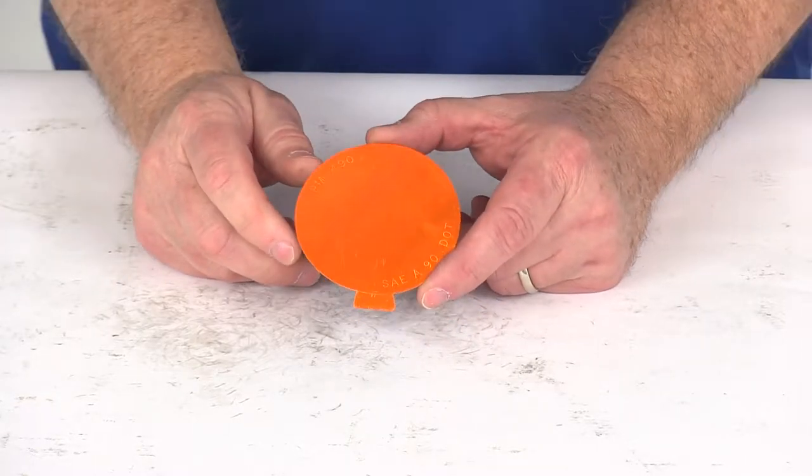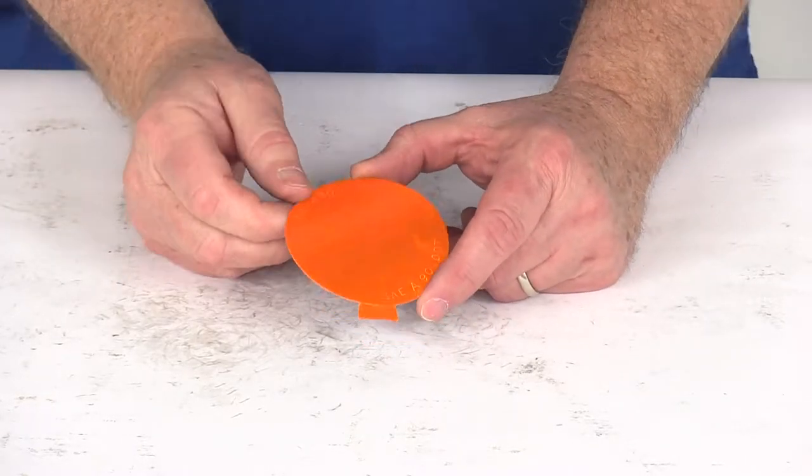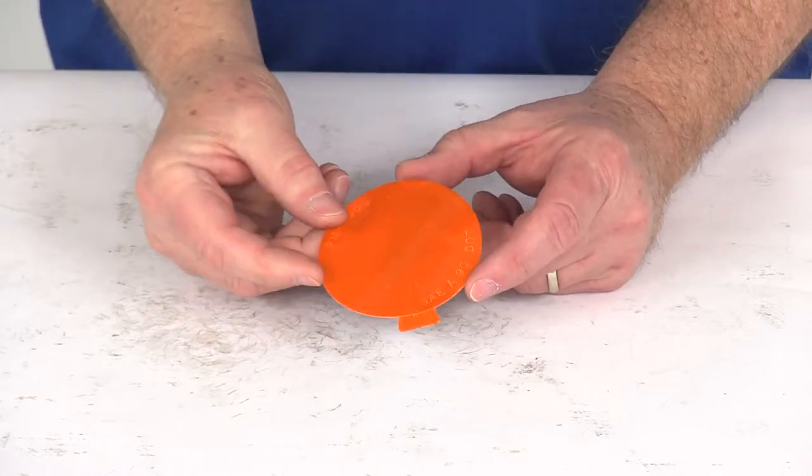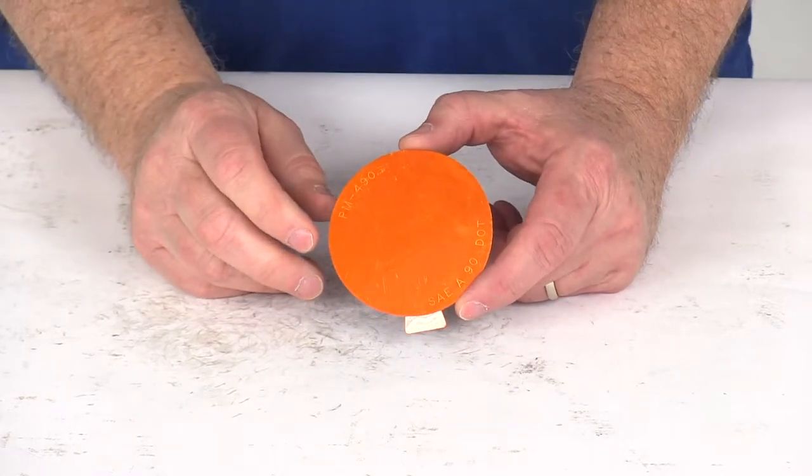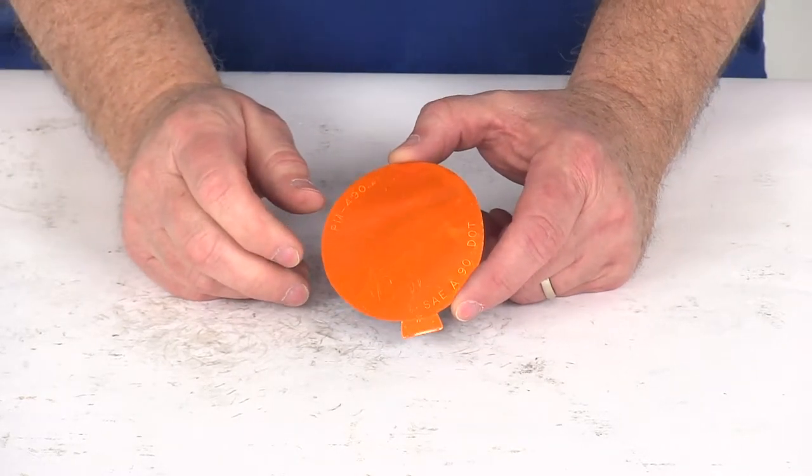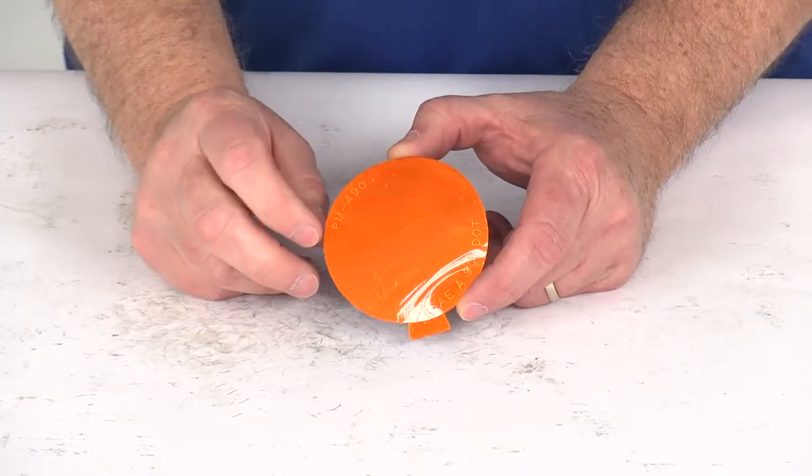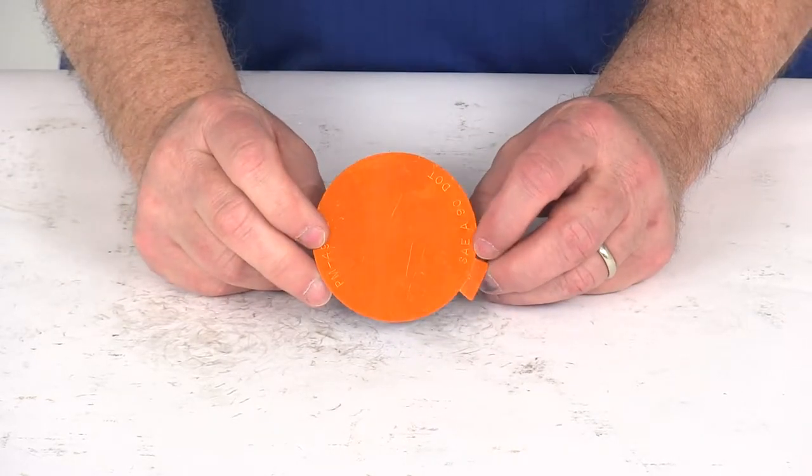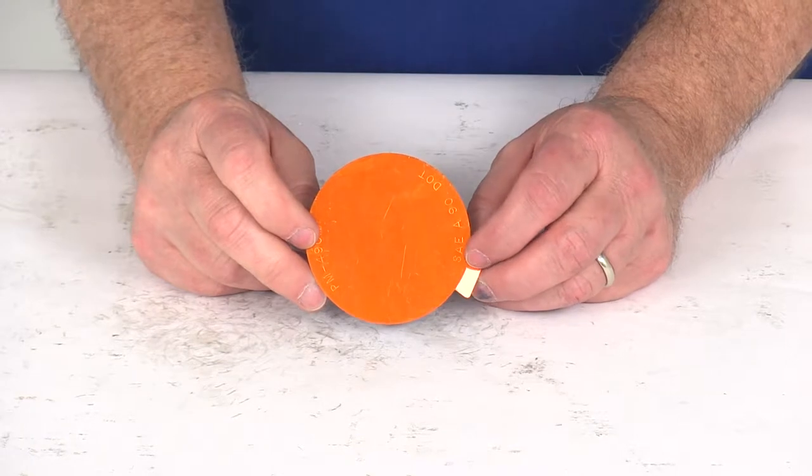Today we're going to take a look at the Peterson Amber Round Microprismatic Reflector. This reflector uses state-of-the-art technology, provides 47,000 microprisms per square inch, so this will provide a 50% wider angle of reflectivity compared to your conventional reflectors.